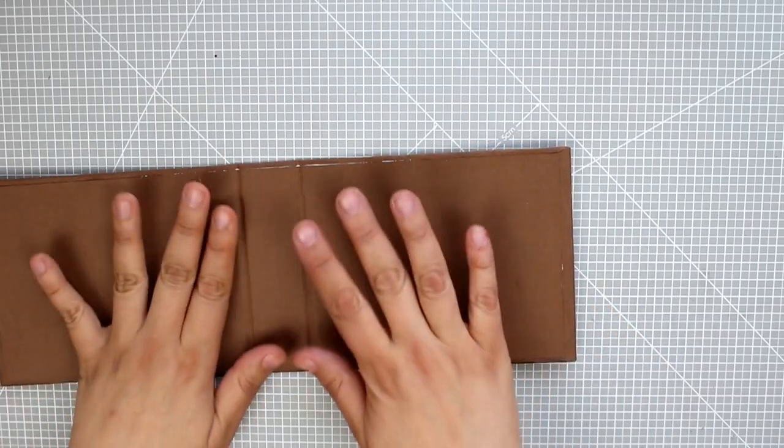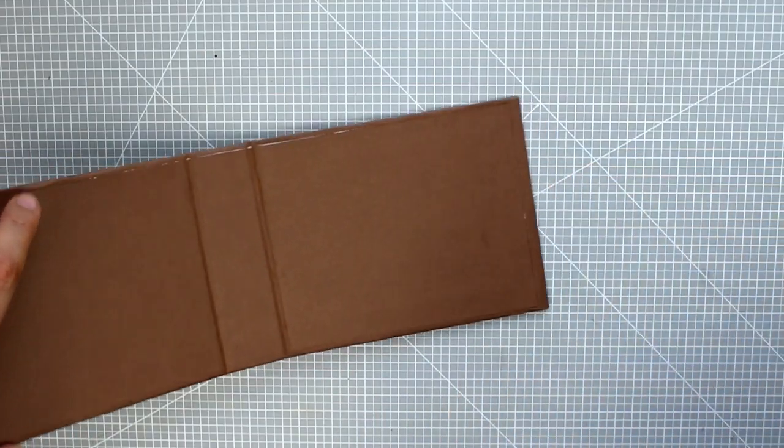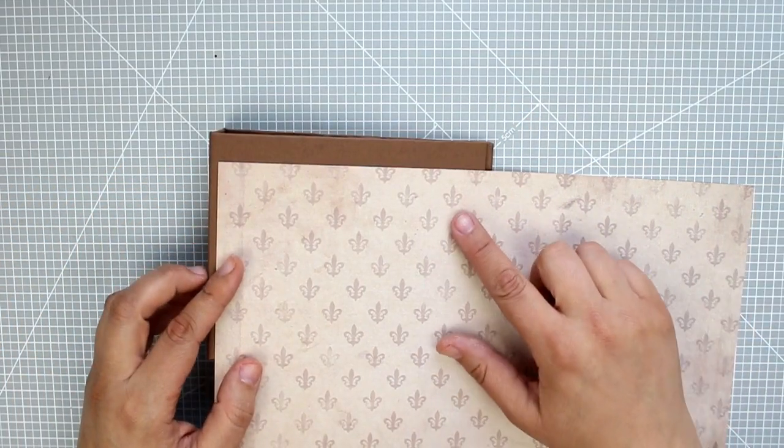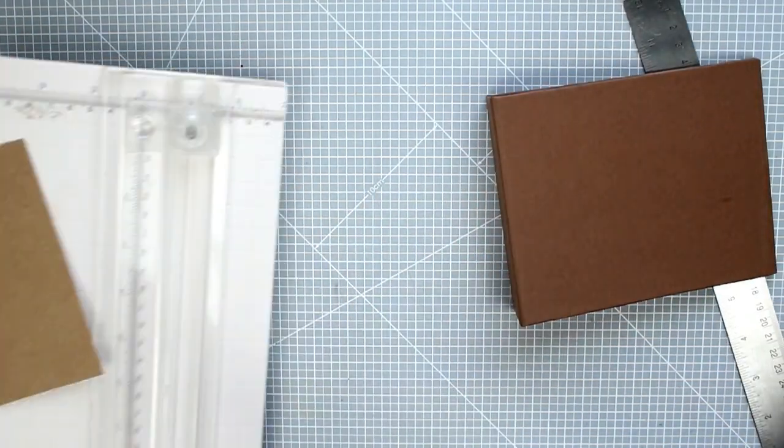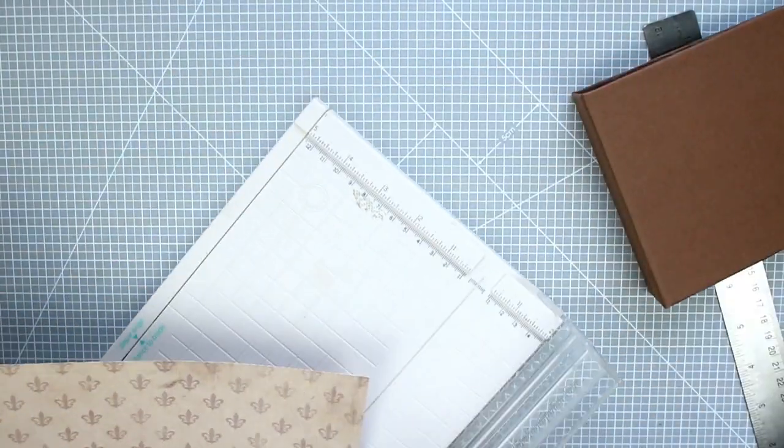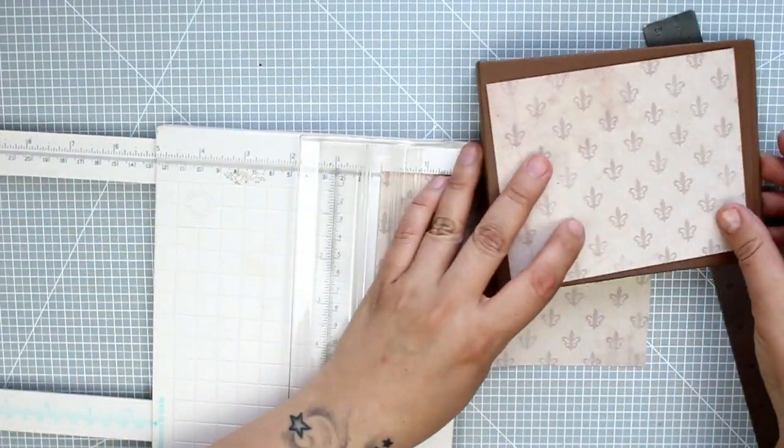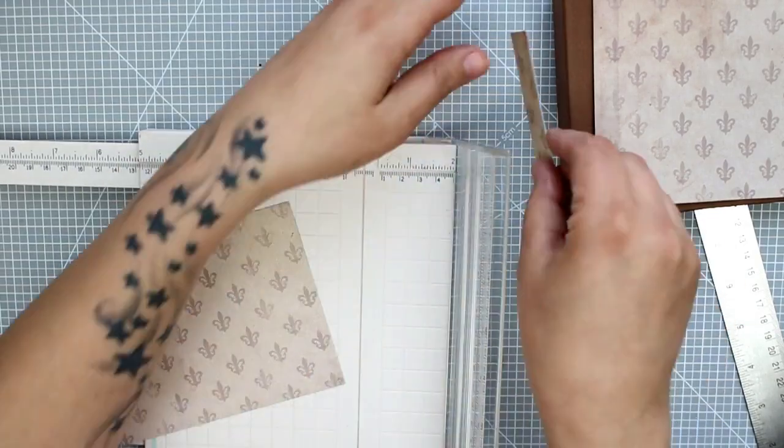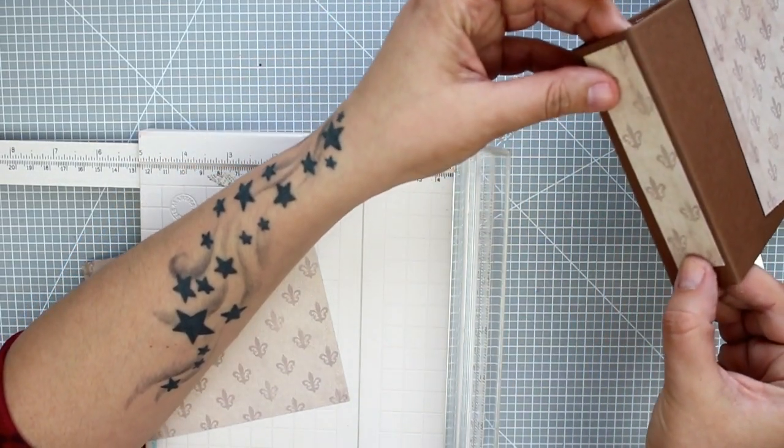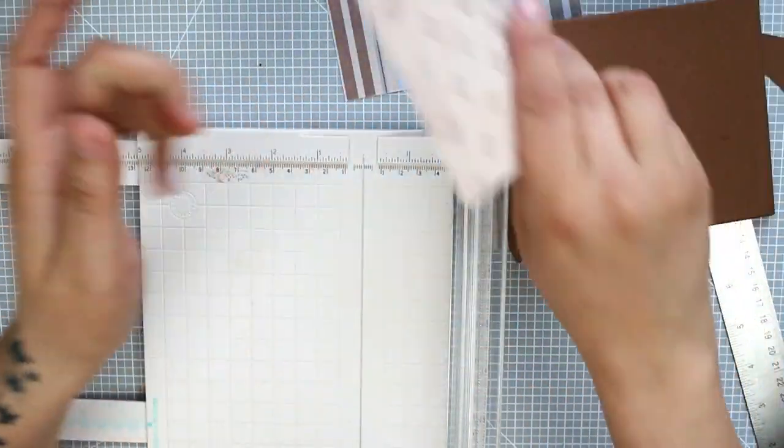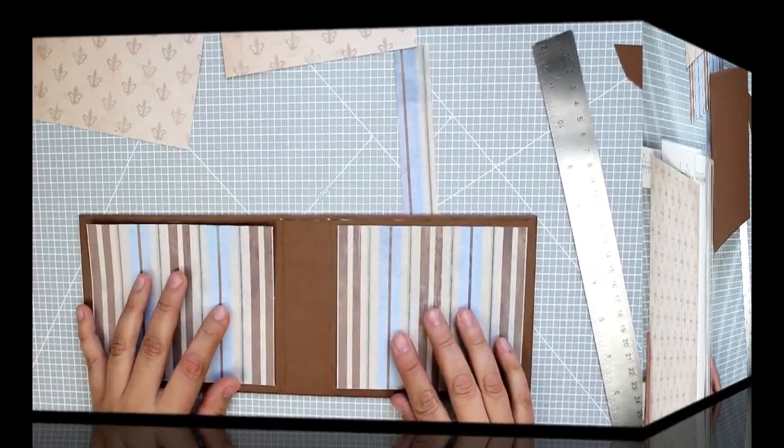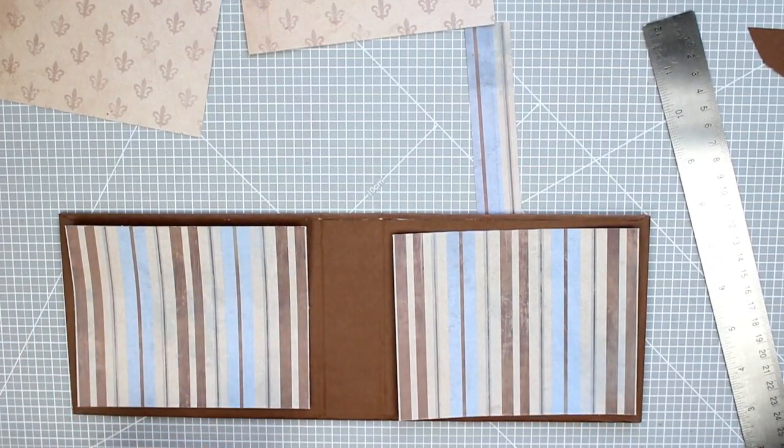Perfect. Now we just need to take the paper we had reserved for the covers and glue the corresponding pieces in each part. For the cover I said I would use this one, so I need 14 by 11 cm. This leftover piece will be perfect for the spine and this other one will go on the back. And on the inside I'll use the other side. These two here I'm also going to ink the edges.